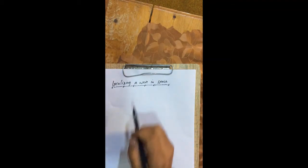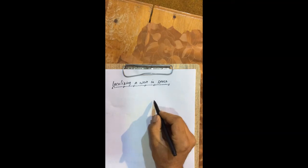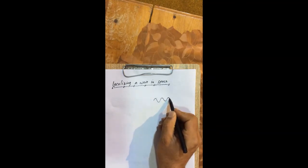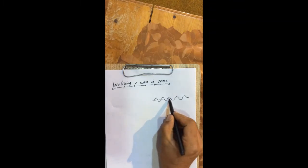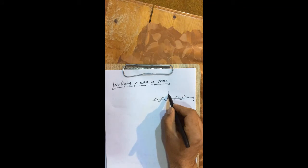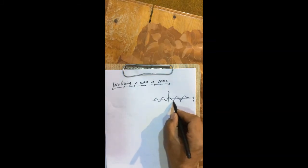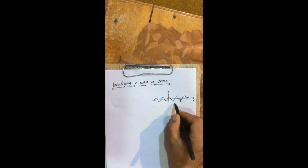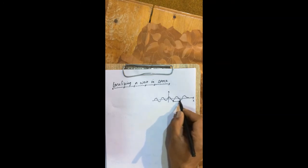Our next topic is localizing a wave in space. Normally a wave can be represented like this. Suppose this is a wave with an x-axis and y-axis. This is the wavelength of the wave — wavelength is basically the distance between two consecutive crests or two consecutive troughs. So here these two consecutive troughs define the wavelength of this wave.